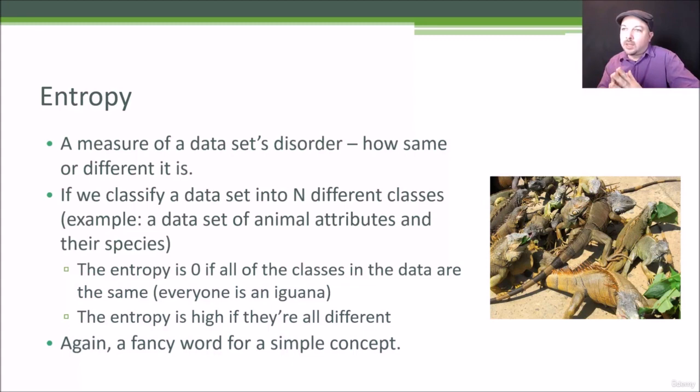Entropy is just a way of quantifying that sameness or differentness throughout the data. An entropy of zero implies all the classes are the same, whereas if everything is different, you'd have high entropy, and something in between would be a number in between. It's just a fancy word for a simple concept - entropy describes how same or different the things in a data set are.